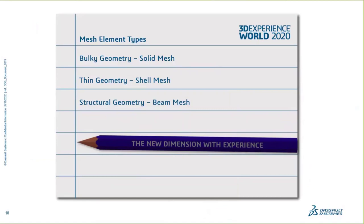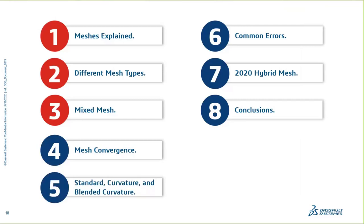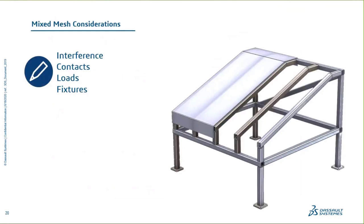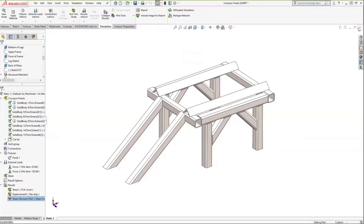That's all well and good when dealing with all bulky geometry leading to a solid mesh, all thin geometry leading to a shell mesh, or all weldment/structural components leading to a beam mesh. But what happens when you need to mix those together? That's the mixed mesh environment. When talking about a mixed mesh, some considerations are: interference, contacts and how those contacts behave, loads, and fixtures.